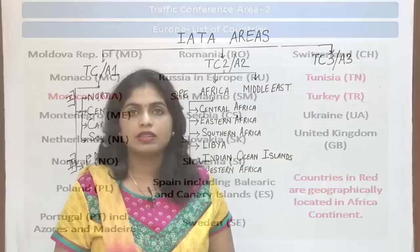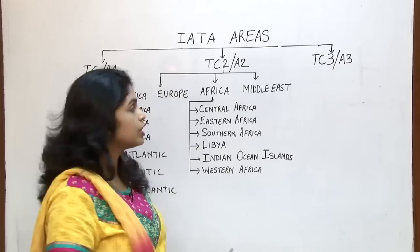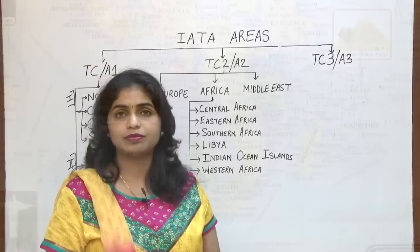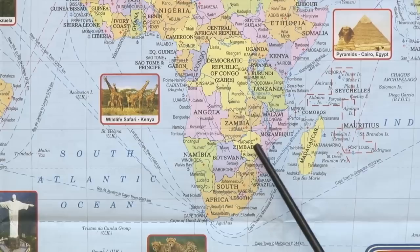Now let us concentrate on Africa — the first sub area or sub zone being Central Africa. Central Africa includes Malawi, Zambia, and Zimbabwe. These are the countries which form Central Africa.